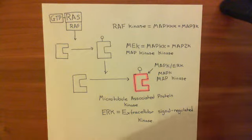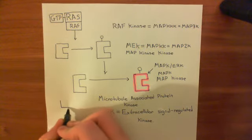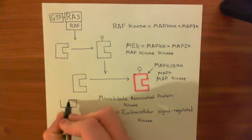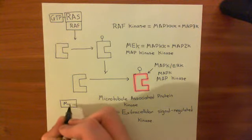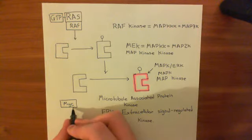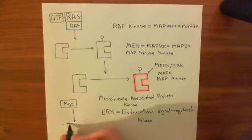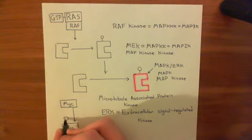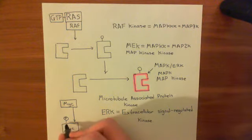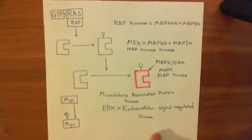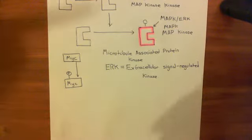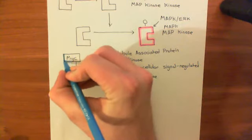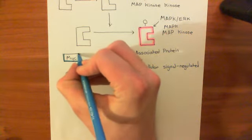So what does this enzyme do? Basically, it takes an inactive transcription factor named MYC (M-Y-C) and sticks a phosphate group onto it, which activates MYC. MYC has a title — just like P53 is called the guardian of the genome, MYC is often called the cell's most powerful mitogen, meaning it causes cells to divide when it has been activated.